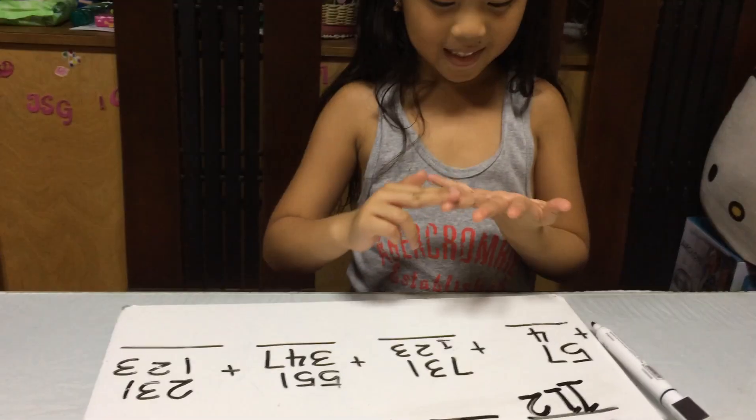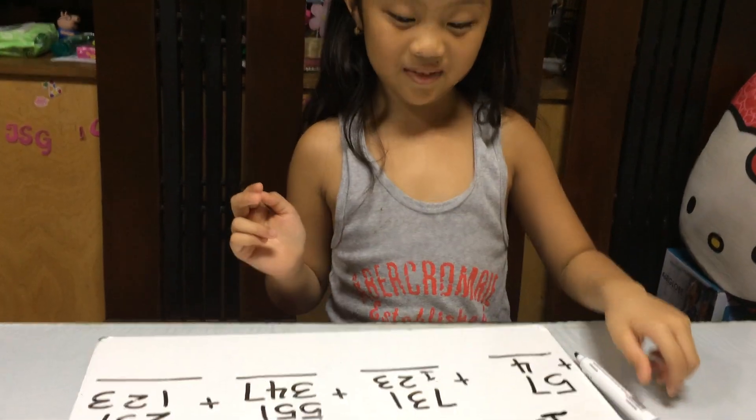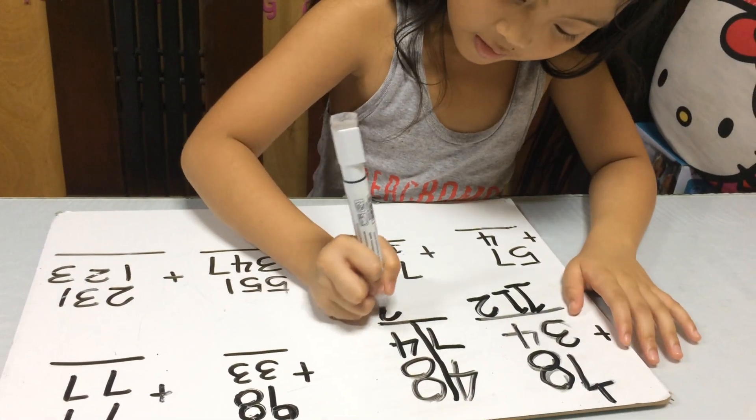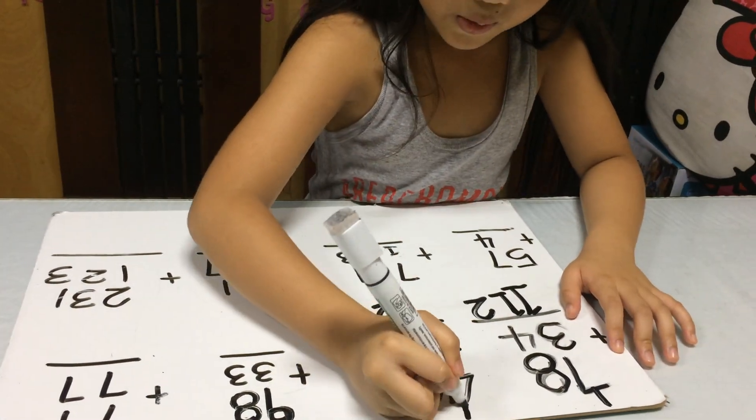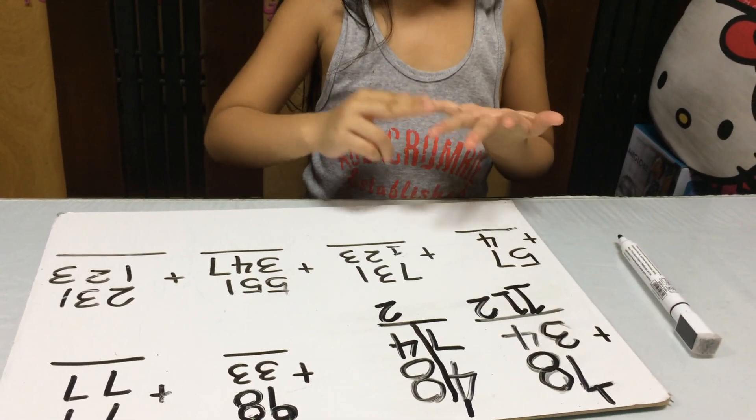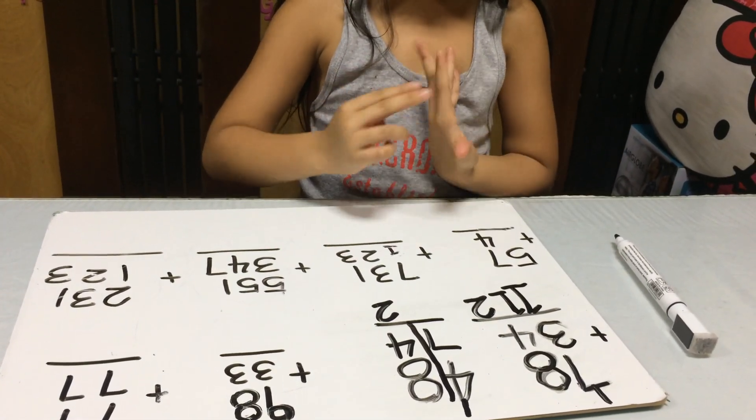8, 9, 10, 11, 12. Again. Okay. Put the 2. Put the 1. 7, 8, 9, 10, 11, 12. Again.